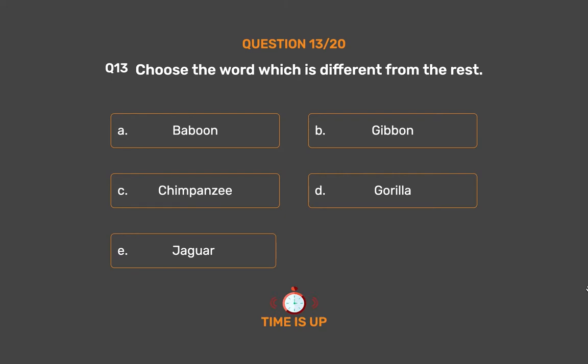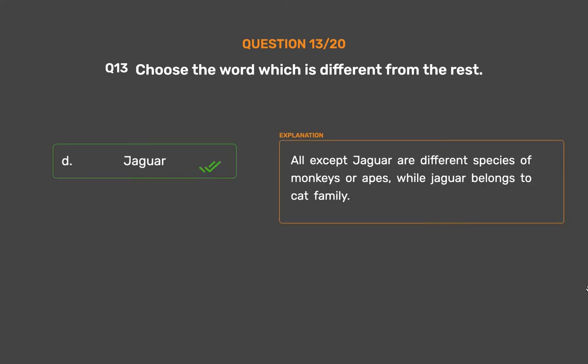The correct answer is Option E: Jaguar. All except Jaguar are different species of monkeys or apes, while Jaguar belongs to the cat family.